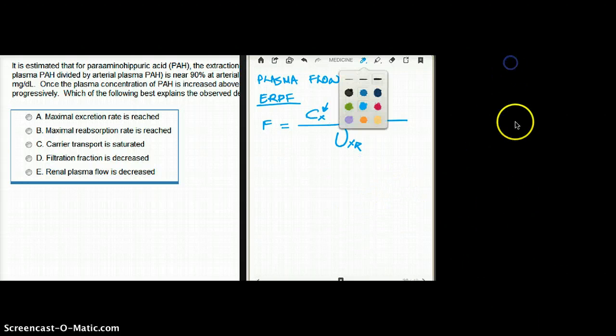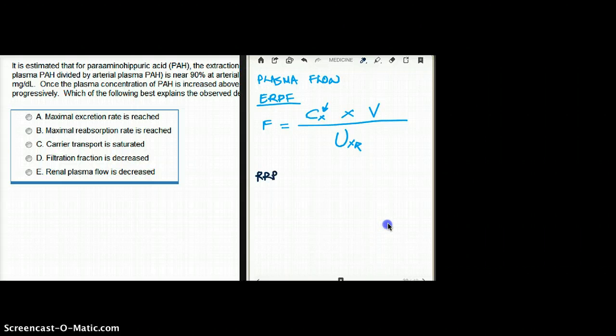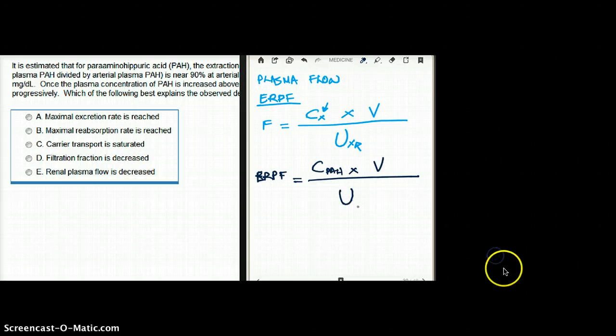So we're going to write that effective renal plasma flow is equal to concentration of PAH times urine flow divided by urine concentration of PAH. As simple as that, that's how we're going to measure effective renal plasma flow.